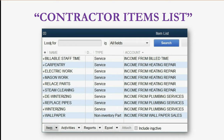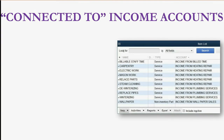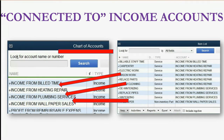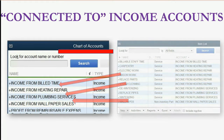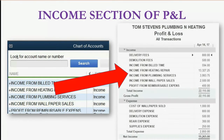This is the items list that we have been using for the course. We set these items up at the beginning of the course when we set up everything for your contractor file. These items are connected to income accounts that you put in the chart of accounts when you originally set up the file, and you need several income accounts in your chart of accounts if you want to see a detail of the income section of your profit and loss.